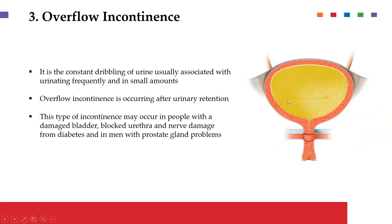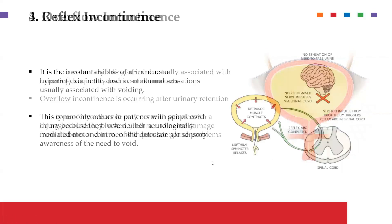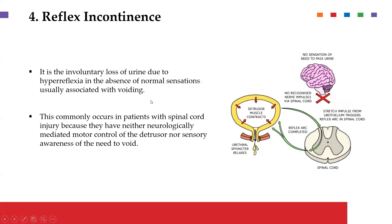Overflow incontinence occurs, as the name suggests, simply because the bladder is so full that the urine has nowhere to go and starts seeping out by force. This normally occurs when there is some obstruction causing the bladder to fill up, or when there is nerve damage to the point that the body cannot perceive that there is an excess amount of urine. As the bladder becomes so full, it overflows and starts dribbling out — and dribbling of urine is one of the main features of overflow incontinence.